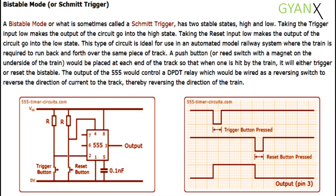This type of circuit is ideal for use in an automated model railway system where the train is required to run back and forth over the same piece of track.